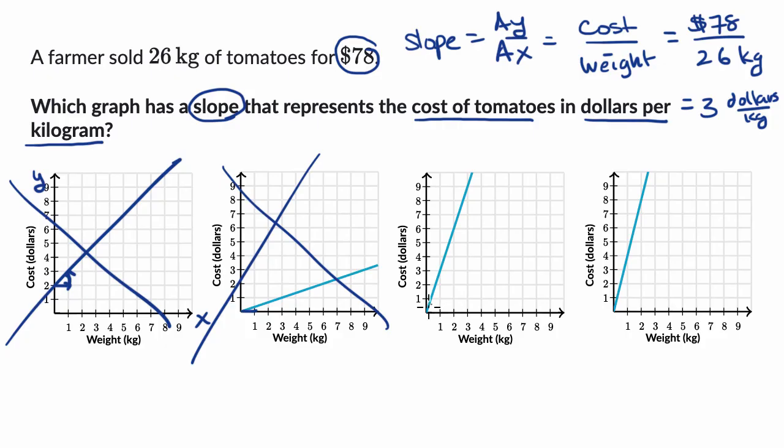Here, every time kilogram increases by one, it looks like dollars are increasing by three. This one looks right. I will check that box.